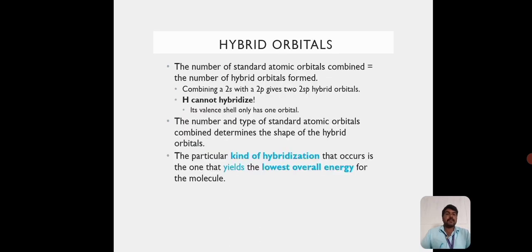Hybrid Orbitals. The number of standard atomic orbitals combined is equal to the number of hybrid orbitals formed. Combining 2S with 2P gives 2 SP hybrid orbitals. Hydrogen cannot hybridize because each valence shell only has one orbital. The number and type of standard atomic orbitals combined determine the shape of the hybrid orbitals. The particular kind of hybridization that occurs is the one that yields the lowest overall energy for the molecule.